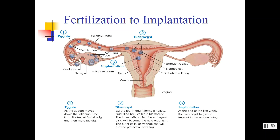You can see the zygote starts to travel through the fallopian tube. If it gets stuck there for any reason, that's called an ectopic pregnancy and has to be terminated because an organism is not able to grow in that tube. It then becomes a blastocyst, starts to divide and develop, and then implants itself right in the uterine lining of the mother and starts to form their connection.